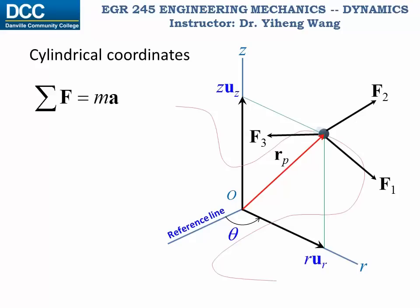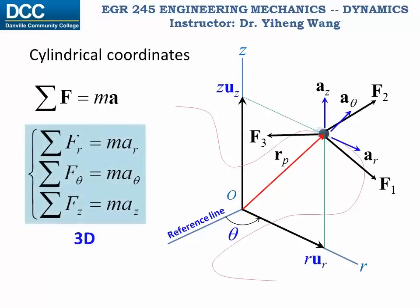We already learned that when studied using a three-dimensional cylindrical coordinate system, the acceleration of the particle has three components: ar along the radial direction, a-theta along the transverse direction, and az along the z direction, which is the same as the rectangular coordinate system. Therefore the equation of motion, Newton's second law, can be rewritten into three scalar equations: the resultant force along the r, theta, or z direction equals m times acceleration along the r, theta, and z direction respectively.